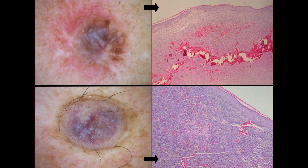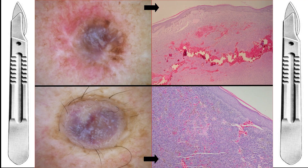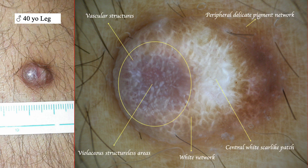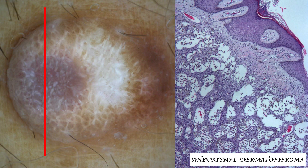Moreover, this structure is usually associated with a peripheral pigment network and different vascular structures that form a multicomponent pattern. Often a diagnosis of melanoma cannot be ruled out and excision should be performed. Here we can see another case of aneurysmal dermatofibroma with a multicomponent pattern which has to be excised. It's interesting because we can see that hemosiderotic and aneurysmal dermatofibromas represent different stages of the same disease, as demonstrated by finding a hemosiderotic dermatofibroma in one area and an aneurysmal dermatofibroma in another area of the same lesion.